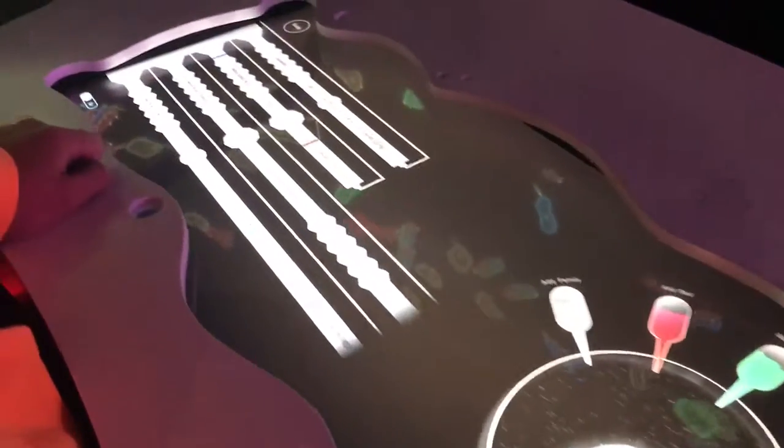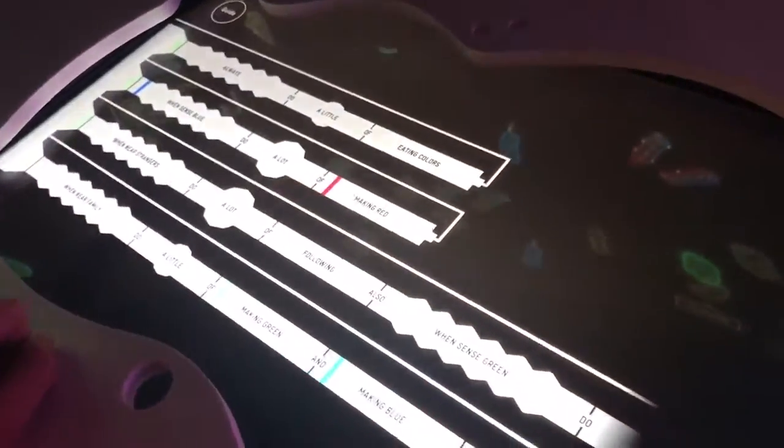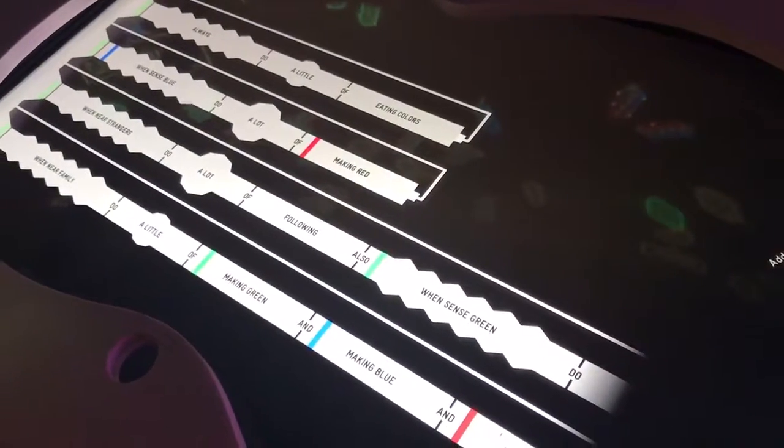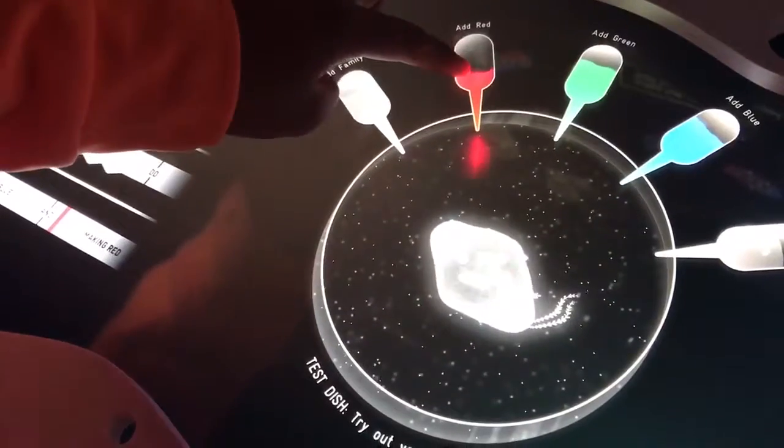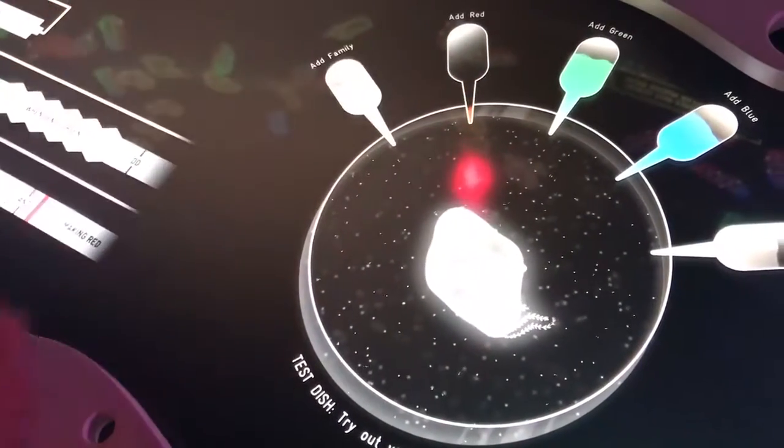So this is the cell, and it's always going to eat color. So like if I add red, then it's going to eat it.